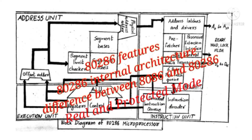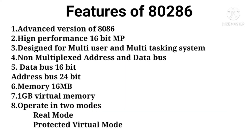Hi, welcome back to my channel. In today's video we are going to discuss the different features of 80286 and its internal architecture. Let's see the features of 80286 microprocessor. Compared with the 8086, it has some additional features, so we can say it is an advanced version of 8086 microprocessor. It is also a 16-bit microprocessor.